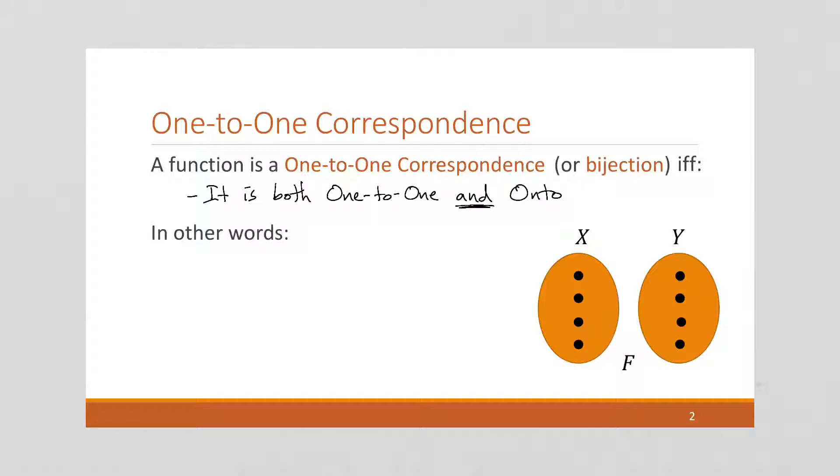So in other words, if you remember, this means that no two elements of the domain match with the same element of the codomain. Which one is that? Is that one-to-one or onto? Well, it's one-to-one, so this is the one-to-one property.